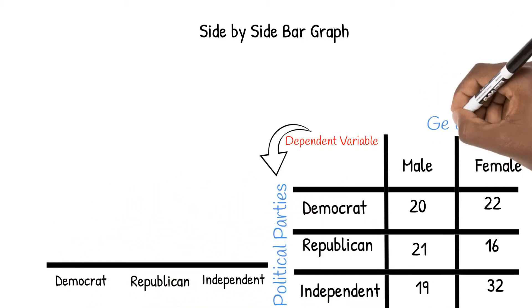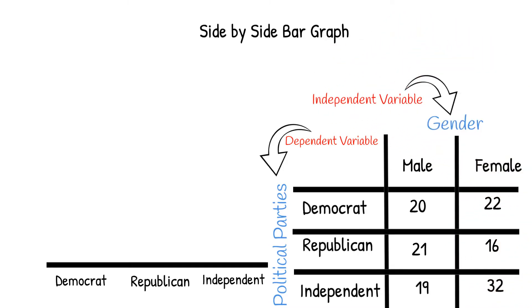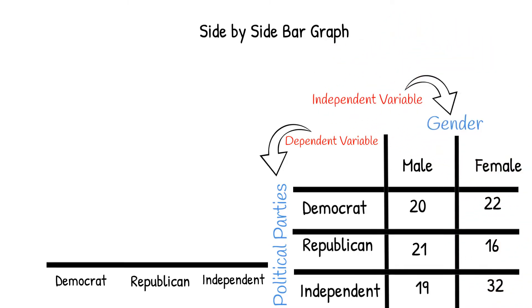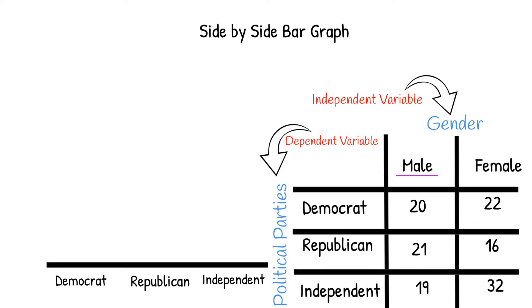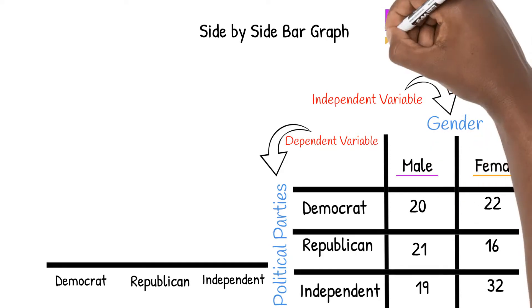Our other variable is gender. We determine a color that will be used for each of the categories of our second variable. In this example, purple will represent the number of males, and orange will represent the number of females.